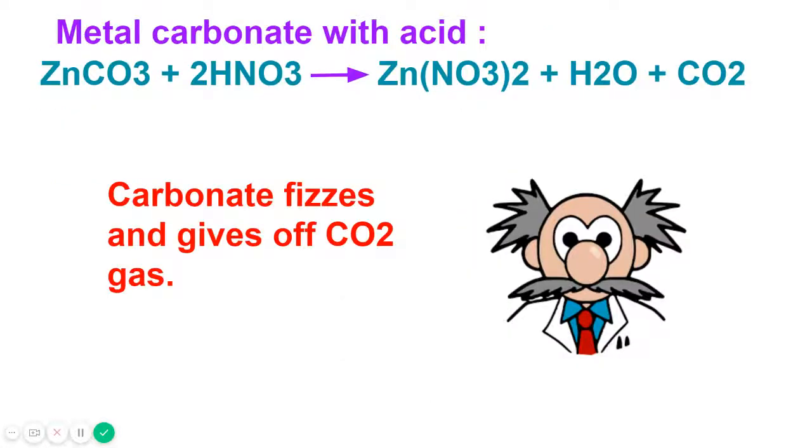Now let's see the reaction of metal carbonate with acid. As you can see, zinc carbonate and nitric acid are reacting. Keep it in mind, whenever there is a reaction of carbonate, carbon dioxide gas is evolved. The carbonate fizzes and gives off carbon dioxide gas. So the solution is then filtered and evaporated to concentrate the solution for crystallization, and in this case zinc nitrate is obtained.